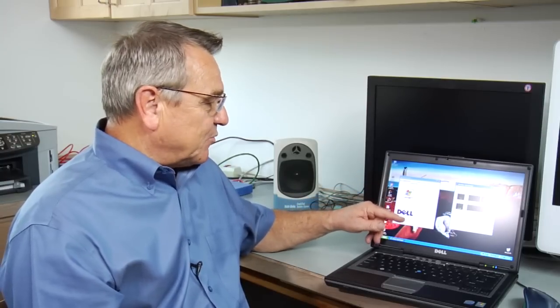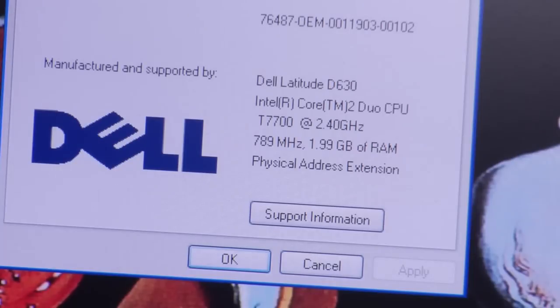We also have the type of processor and the speed of the processor listed on the left hand side under system properties. We can see that this processor is listed as a 2.4 GHz and that tells you how fast it vibrates or passes the information.